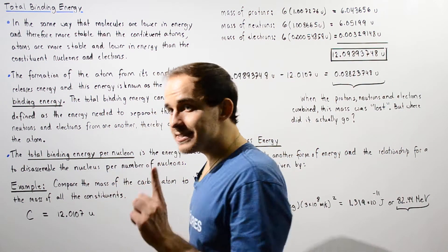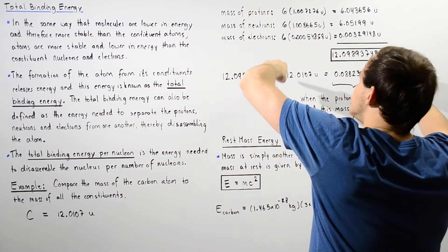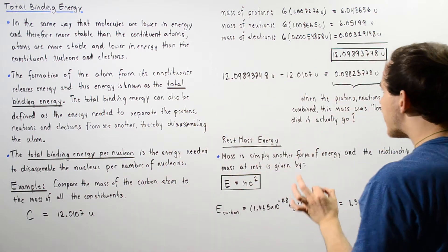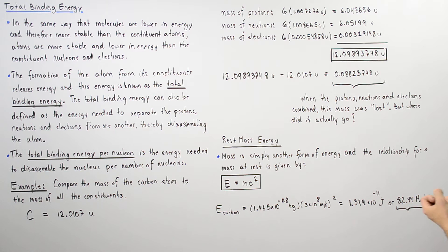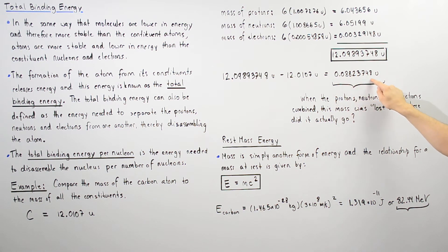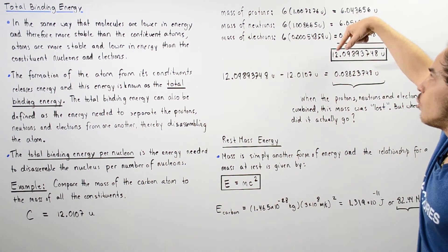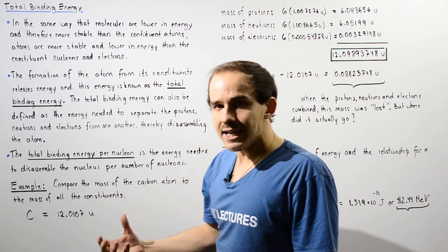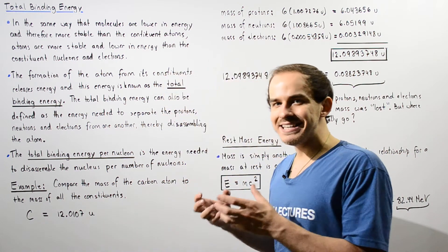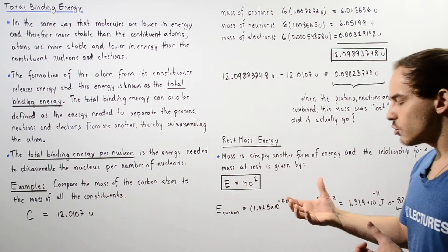Notice that there is a discrepancy between the mass of our carbon as shown by the periodic table and the mass of all these constituent elements — the protons, neutrons, and electrons. If we take this and subtract, we see that there is a decrease in the total mass of our atom. There is a difference in mass of 0.08823748 unified atomic mass units. So this atom of carbon has a smaller mass than the mass of all its constituents. The question is: where exactly did this mass go? When protons, neutrons, and electrons combine to form an atom, there is a decrease in mass — and this leads directly to the idea of rest mass energy.